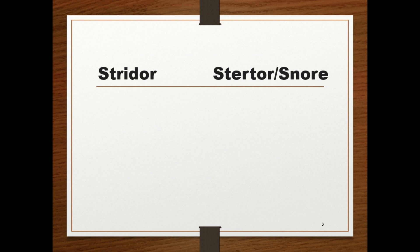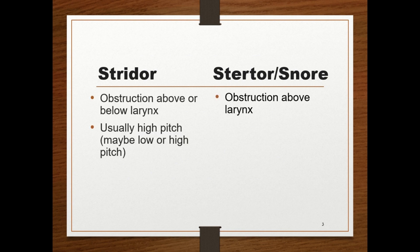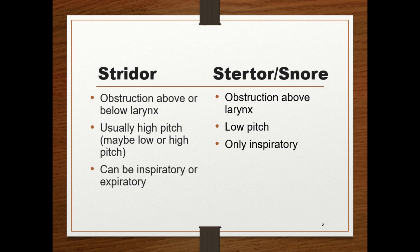Stridor is different from stertor/snore. In stridor, obstruction occurs above or below the larynx; it is usually high-pitched and can be inspiratory or expiratory. Whereas in stertor/snore, obstruction occurs above the larynx; it is low-pitched and is only inspiratory.